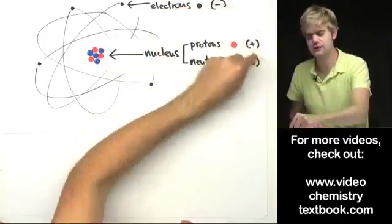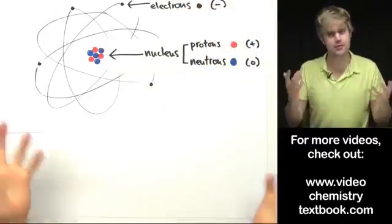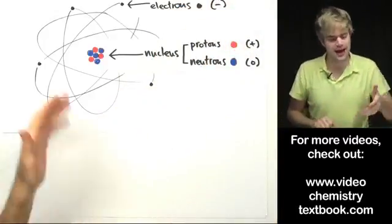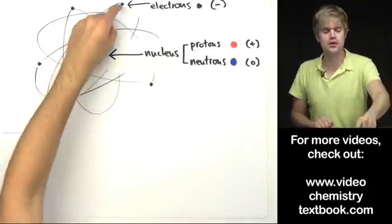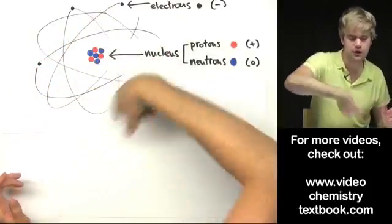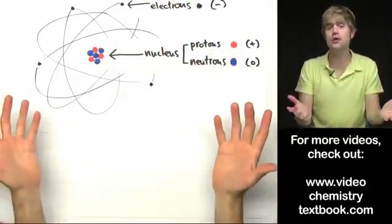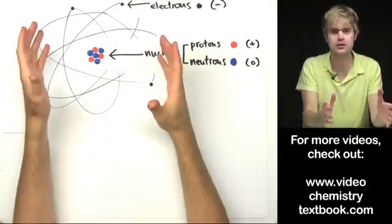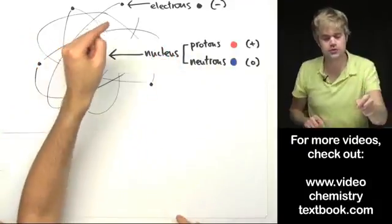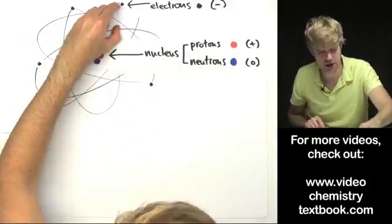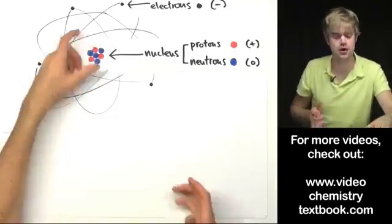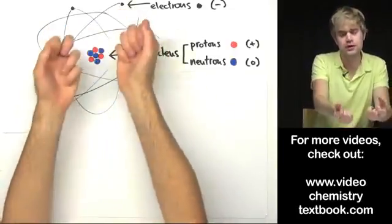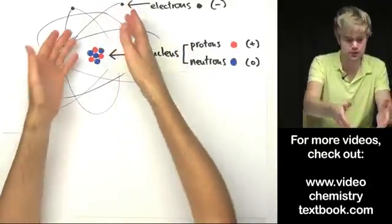Now positive and negative charges attract. Remember that? Opposite charges attract. And that has important consequences for how this atom works. We said that these electrons are flying around the outside of the atom. They're moving really fast. So why don't they just fly out into space? Well, the reason why is because the negatively charged electrons are attracted to the positively charged protons. So the protons kind of pull the electrons in. They keep them from just flying away.